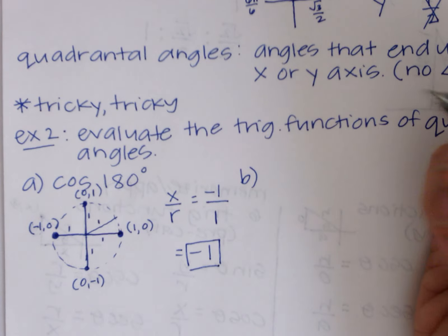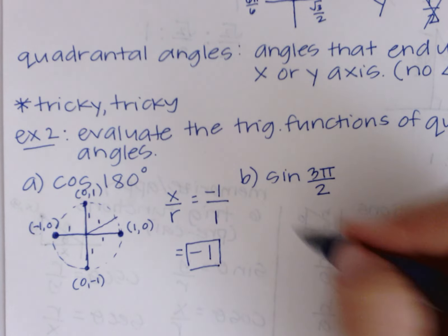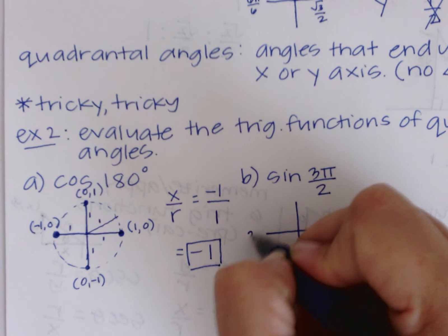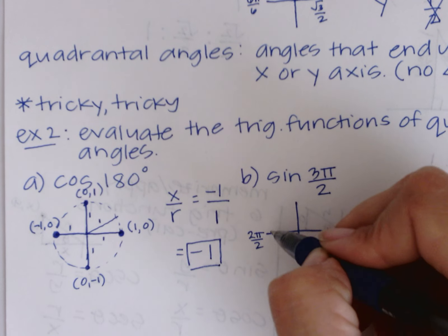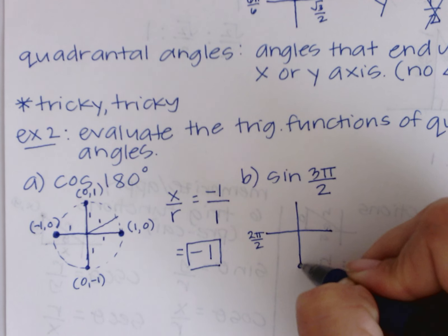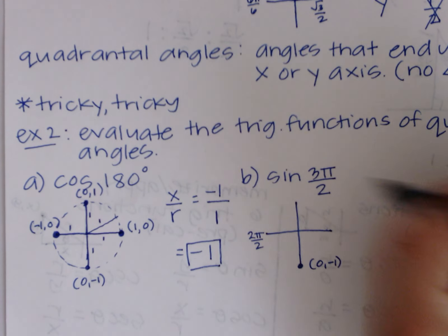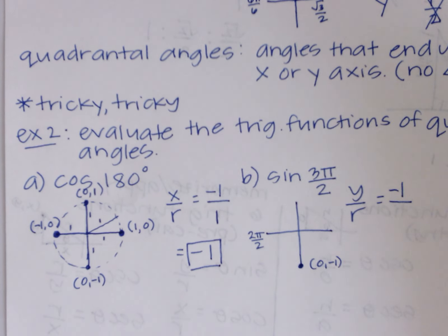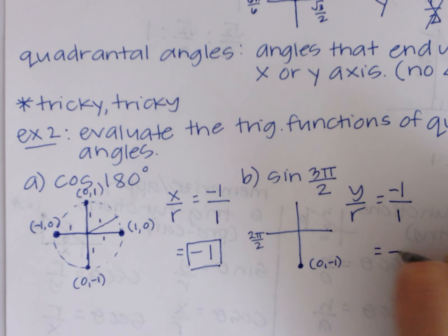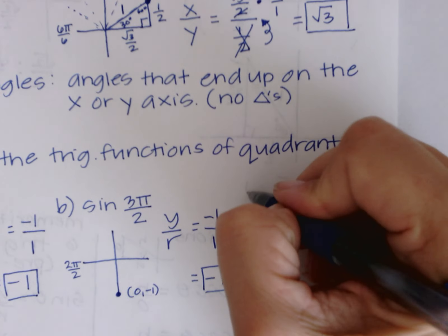Example 2b: sine of 3π/2. This is 2π/2 = π at the halfway point, so 3π/2 is three-quarters of the way around, landing at the bottom — the point (0, -1). Sine = y/r: the y-value is -1, r is 1, so sine of 3π/2 equals -1.